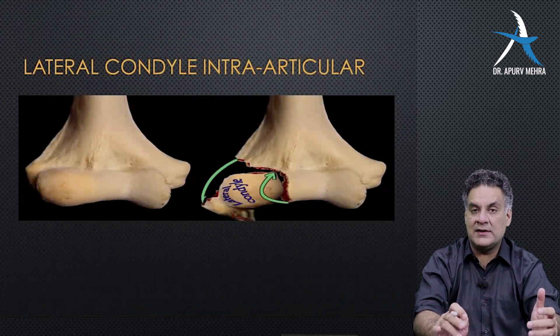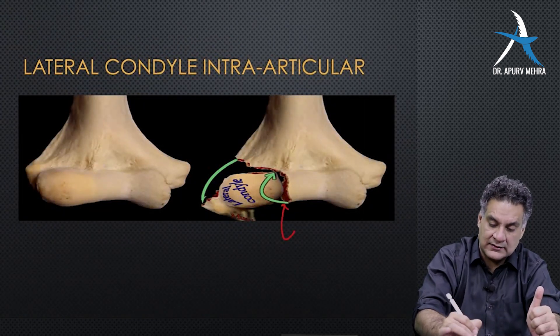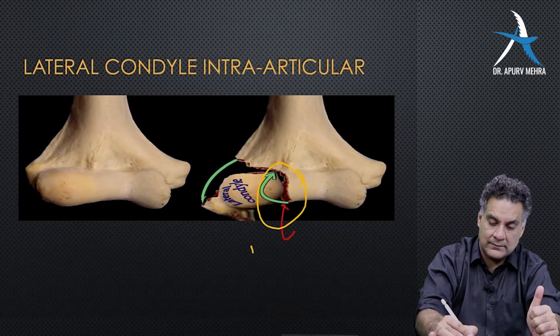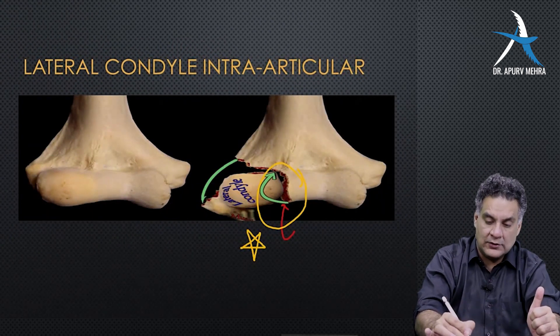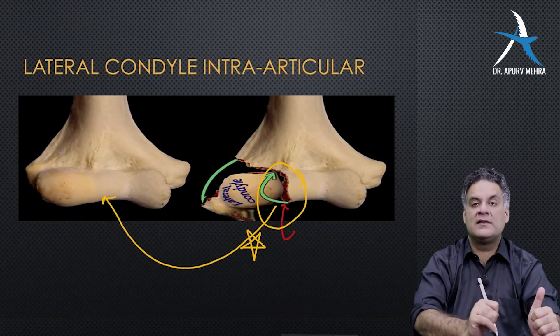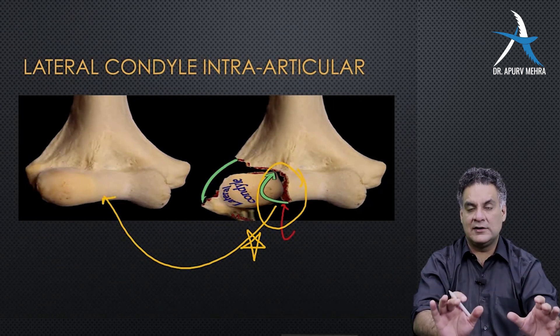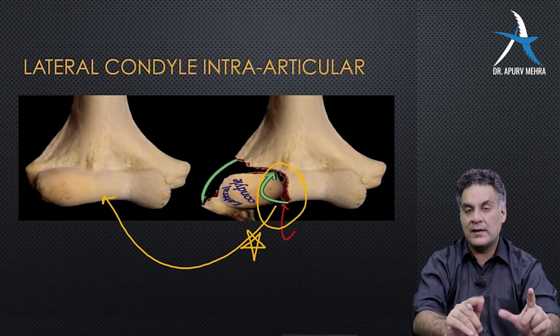Compare it to this image. Here, the fracture occurs through the joint surface. Your aim is to restore the joint surface. You will open it. Perfectly reduce it like a jigsaw puzzle. Fix it.